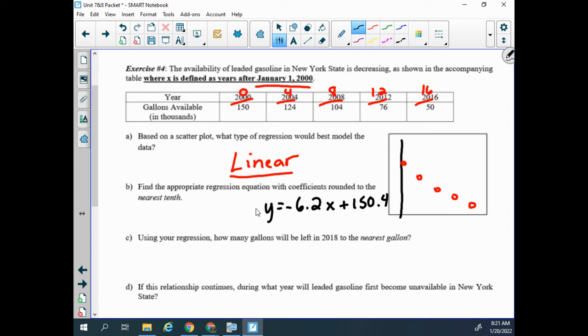Now we're going to use that equation to see how many gallons will be left in 2018. Changing the numbers in the top does make this equation much smaller, otherwise my y-intercept would really be large if we were using the years there. So looking at the regression, using your regression, how many gallons will be left in 2018 to the nearest gallon, we need to look at this number and decide how it would fit in our x values. 2018 is 18 years after 2000, so that's what I'm going to plug in for x.